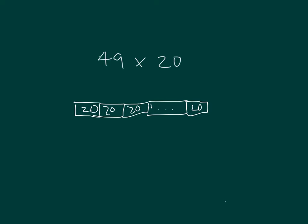It's going to be helpful to think of 50 20s and then take away 1 to be able to get 49 20s.